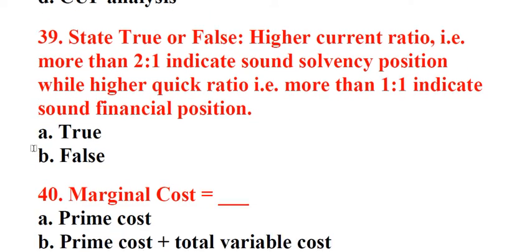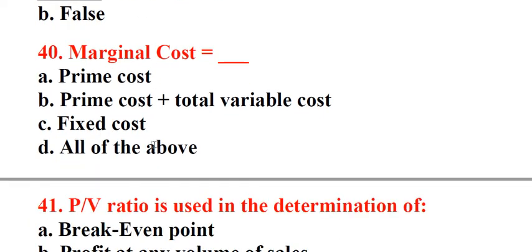Question 39: State true or false. Higher current ratio, i.e. more than 2 to 1, indicates sound solvency position while higher quick ratio, i.e. more than 1 to 1, indicates sound financial position. A. True, B. False. Answer: A. True. Question 40: Marginal cost equals underscore. A. Prime cost, B. Prime cost plus total variable cost, C. Fixed cost, D. All of the above. Answer: B. Prime cost plus total variable cost.